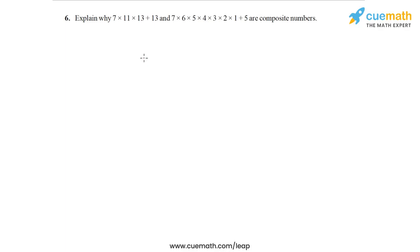Question 6 of this exercise is actually a very interesting question. We are given two numbers in the form of these expressions and we have to explain why these numbers are composite numbers and not prime numbers.